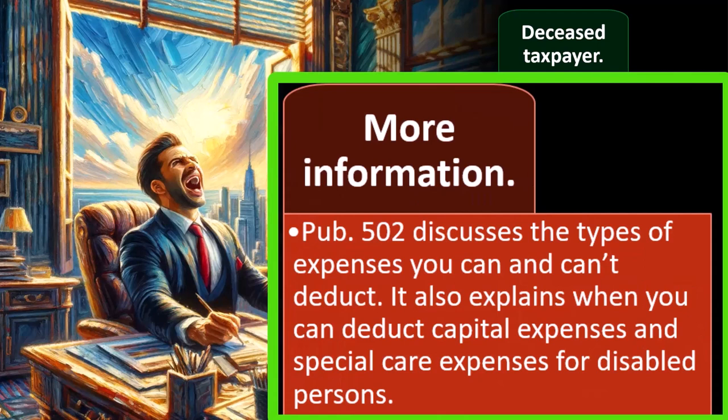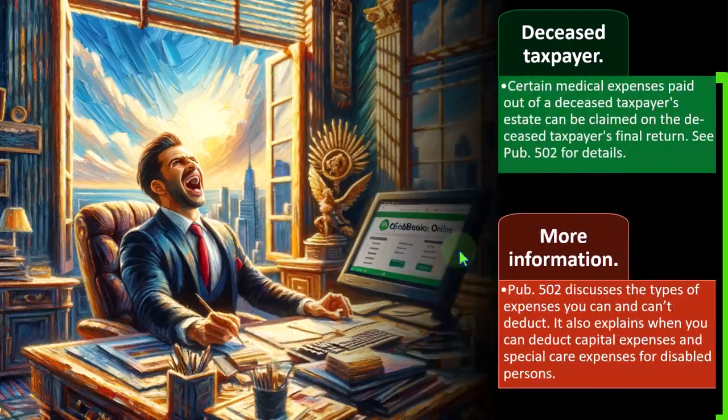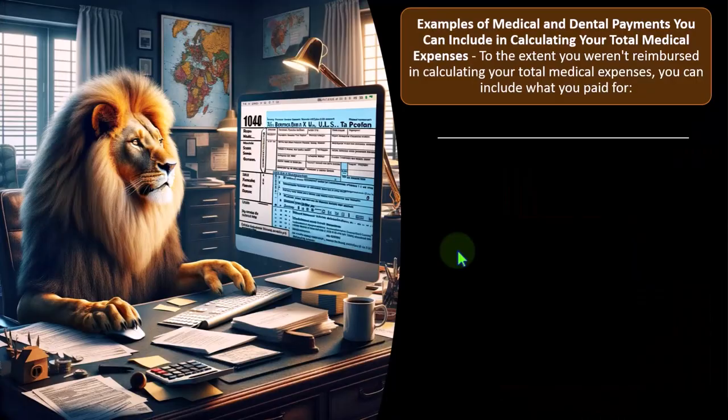Publication 502 discusses the type of expenses you can and can't deduct. It also explains when you can deduct capital expenses and special care expenses for disabled persons.